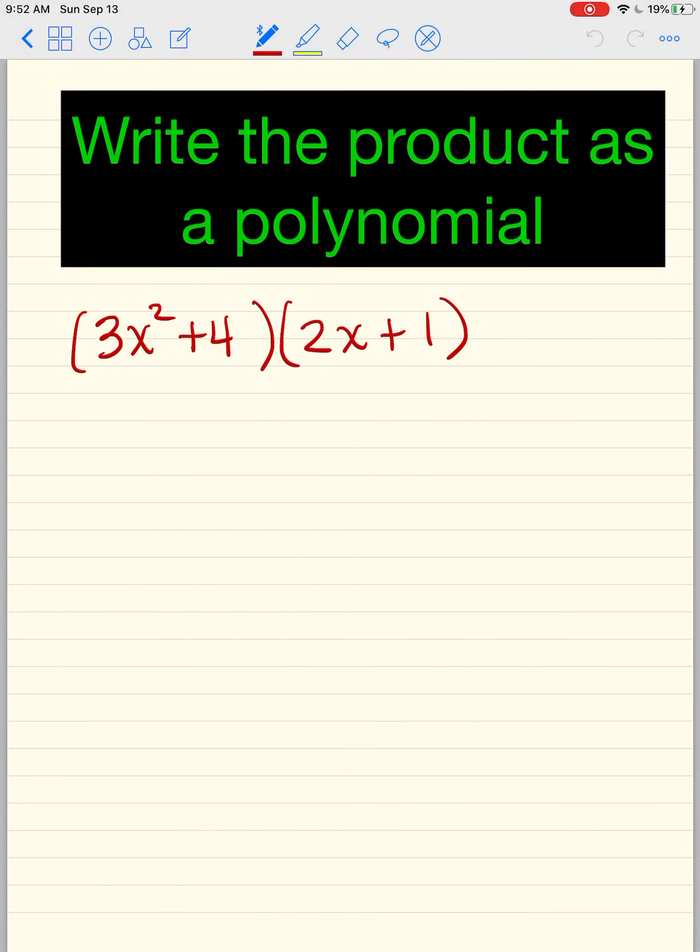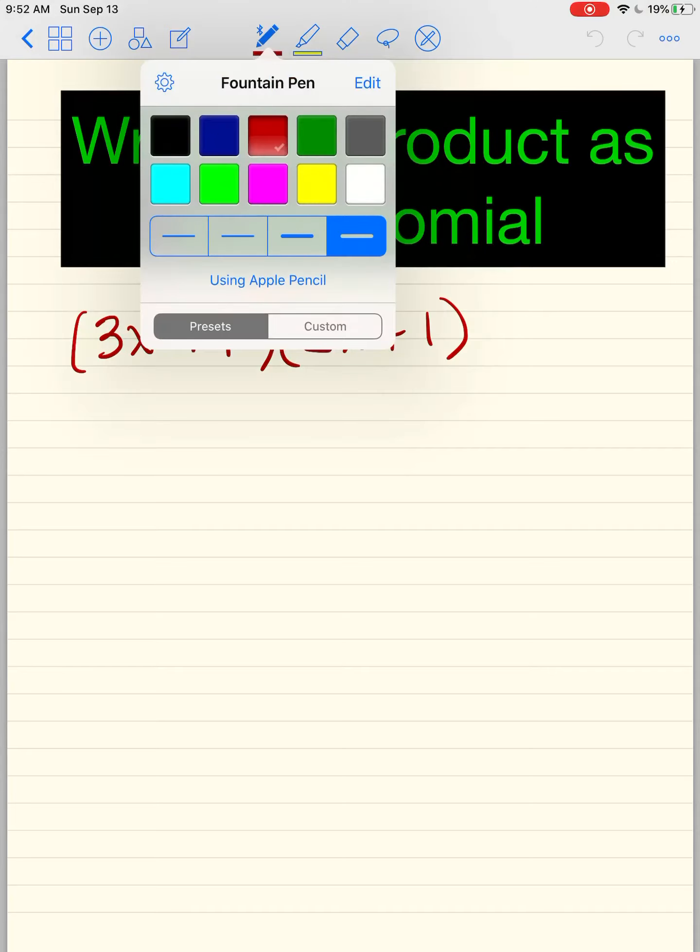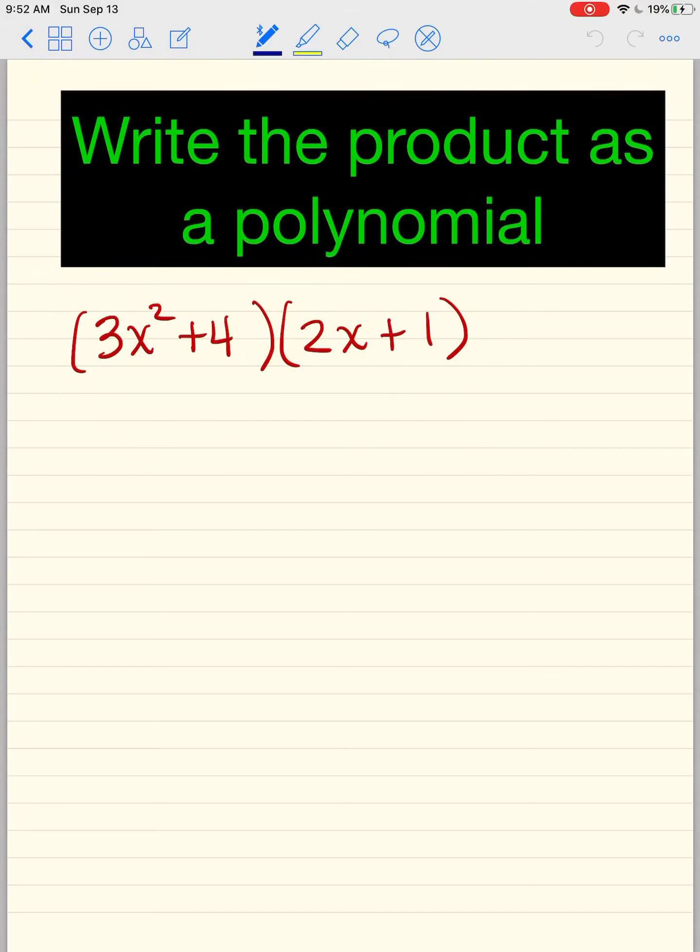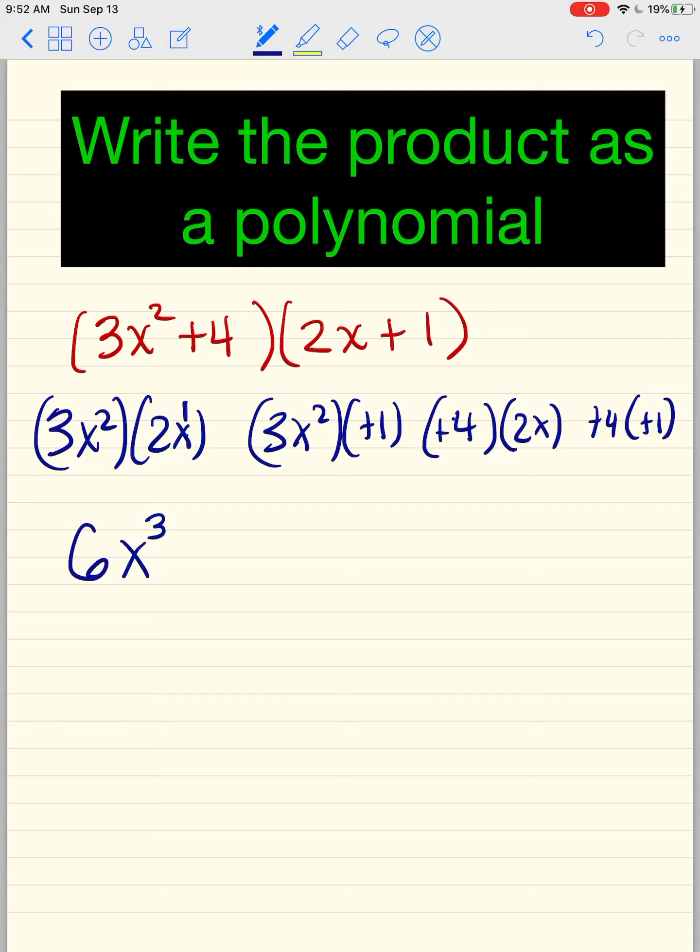So let's try that with this here. For those who don't like FOIL, I'm sure a lot of teachers taught you FOIL, first, outer, and the last. You can go 3x² times 2x. And then 3x² times positive 1. Then you can do positive 4 times 2x. And you can do positive 4 times positive 1. So that's 6x³ because we add exponents and we multiply coefficients. 3 times 1 is, we need a sign, okay? And then 4 times 2, that's 8x, and then 4.